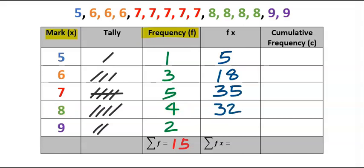Next, 8 × 4, we got 32. Next, the last, 9 × 2, and here we got 18. Next, 5 + 18 + 35 + 32 + 18, and we got 108.